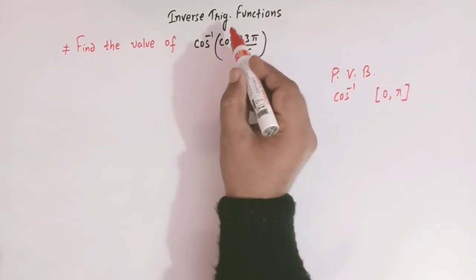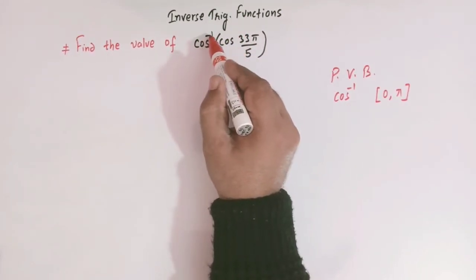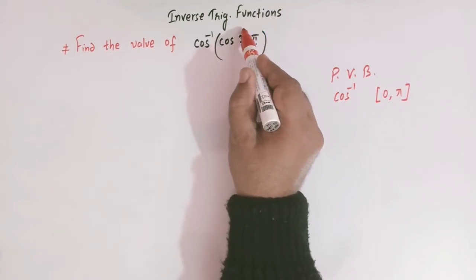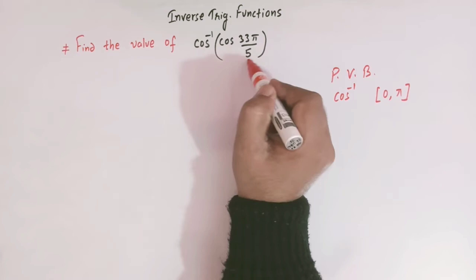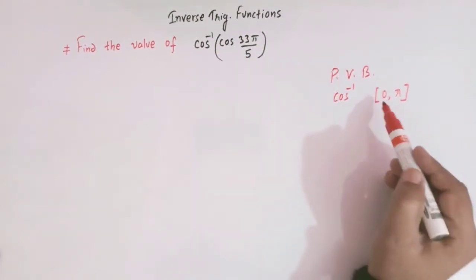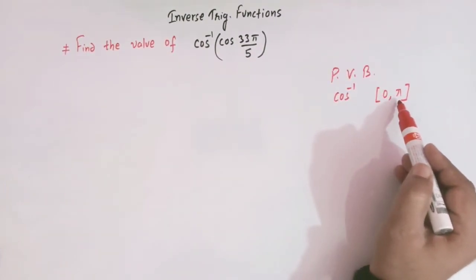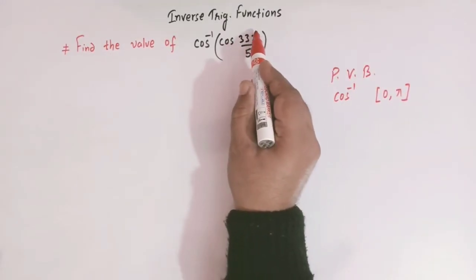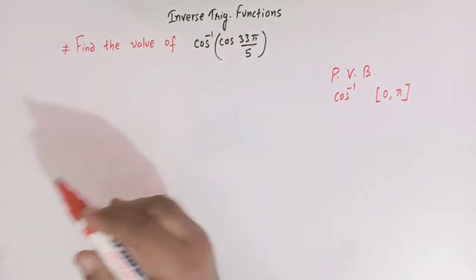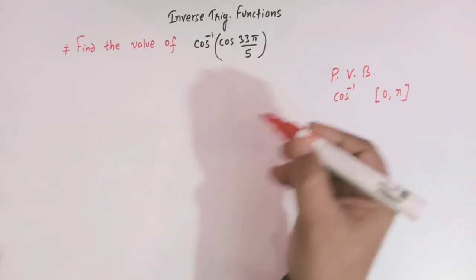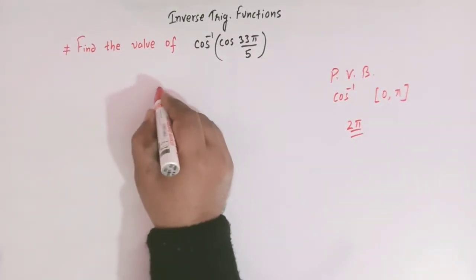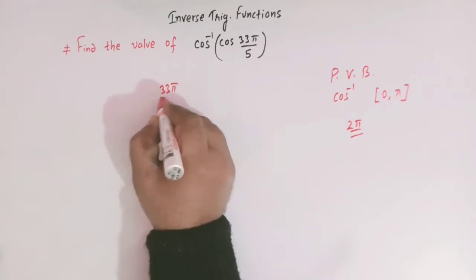Here we have cos inverse of cos(33π/5), and we cannot directly cancel these two terms — that is, cosine inverse and cos — because this angle does not lie between 0 and π. So what we will do is rewrite this angle in terms of an integral multiple of 2π.